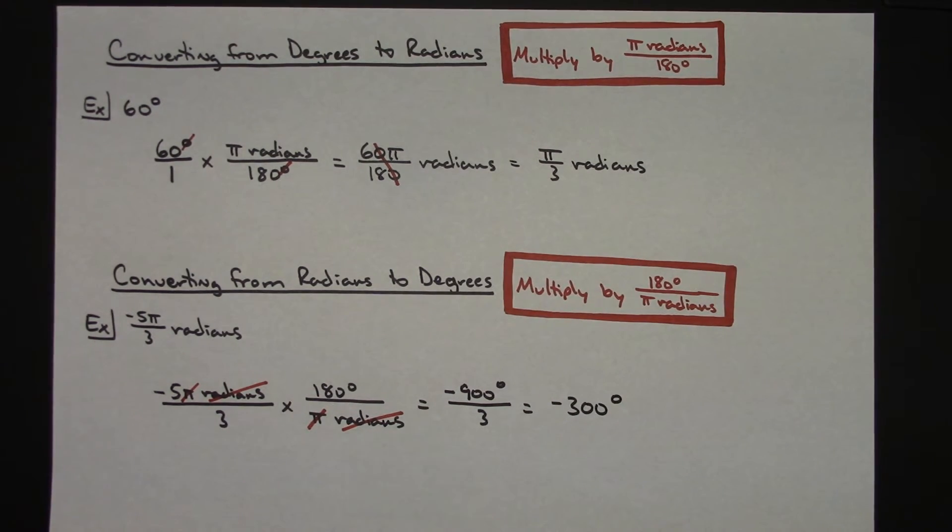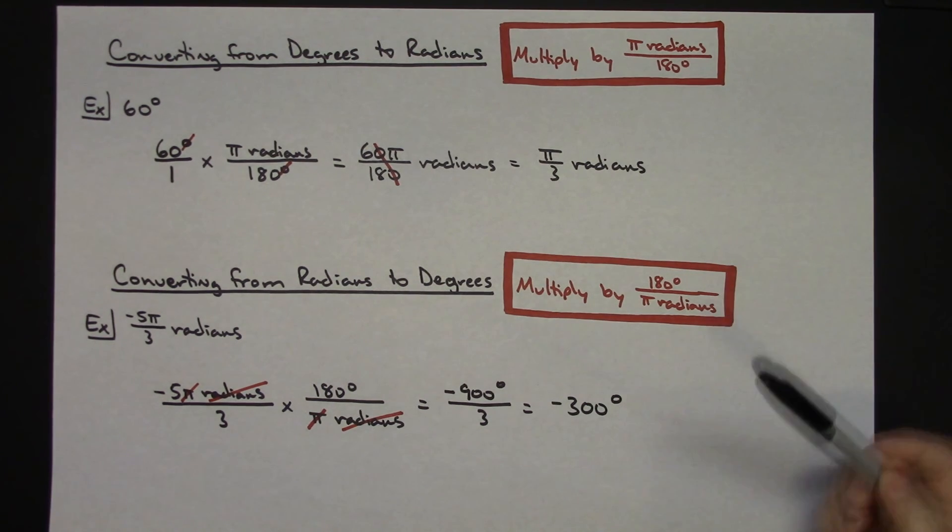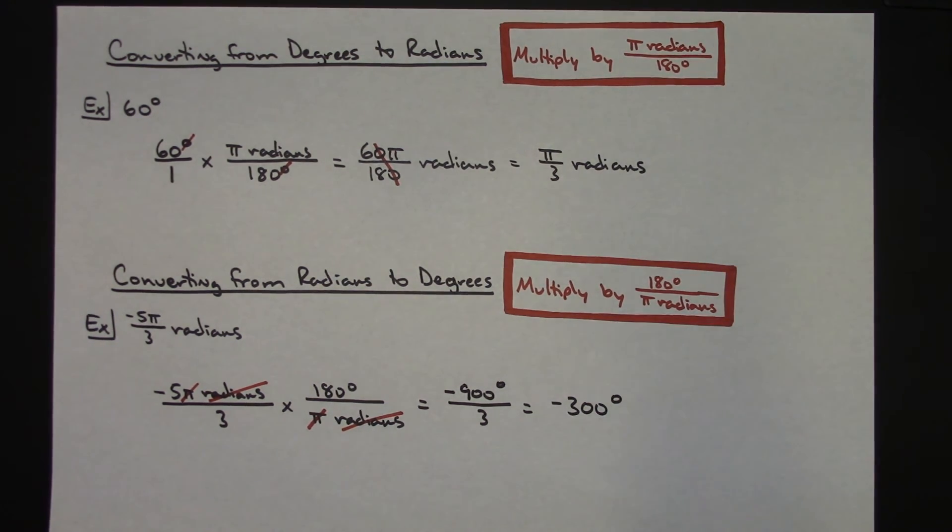So just two real quick examples there of how to convert between degrees and radians, radians to degrees. Using the unit analysis and your conversion factor, it makes the process relatively simple. Thanks for watching.